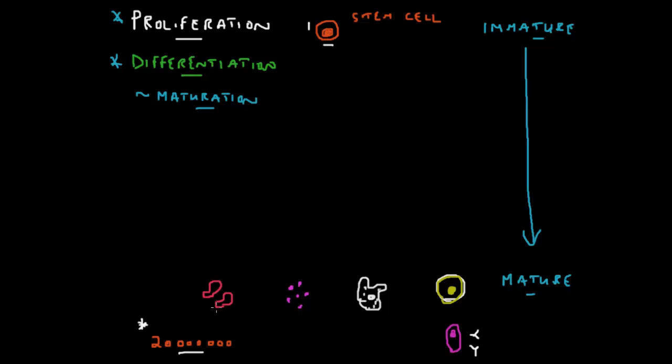Now this process does not happen in one step. Stem cell doesn't just change overnight into a red blood cell, into a platelet, or into a white blood cell. So a number of steps have to take place. And I'm not going to draw all of them because then you'll have to wait for 20 million different little steps. But let's just go through some of these steps to show you what happens.